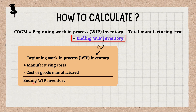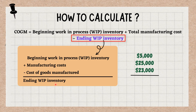For example, a company in a month has a beginning work in process inventory of $5,000, spends $25,000 on manufacturing costs and records $23,000 in cost of goods manufactured. The equation for the ending work in process inventory is $5,000 plus $25,000 minus $23,000 equals $7,000.